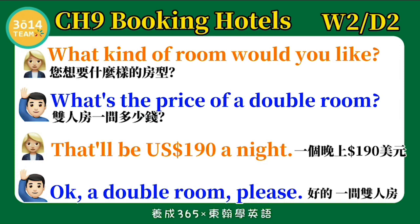你想要什么样的房型呢? What's the price of a double room? 双人房一间多少钱? That will be 190 US dollars a night. 一个晚上一百九十美元。OK, a double room please. 好的一间双人房。